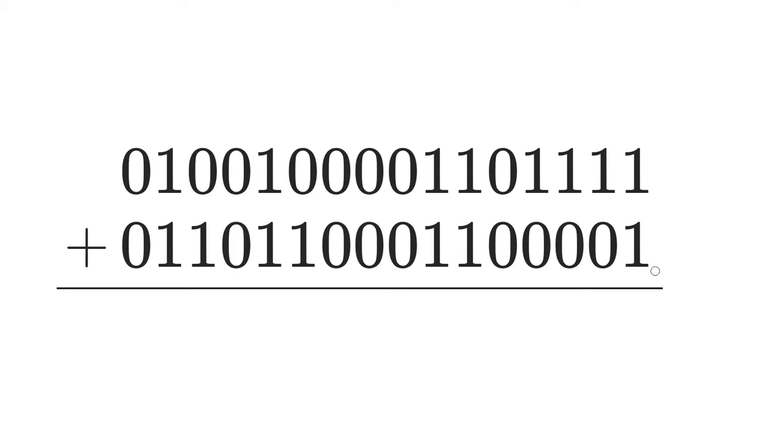Let's see how we would add these two 16-bit binary numbers. It's a lot like adding numbers in decimal, the only difference is that we're dealing with powers of 2 instead of powers of 10. So we'll start on the right side just like we do for adding decimal numbers.